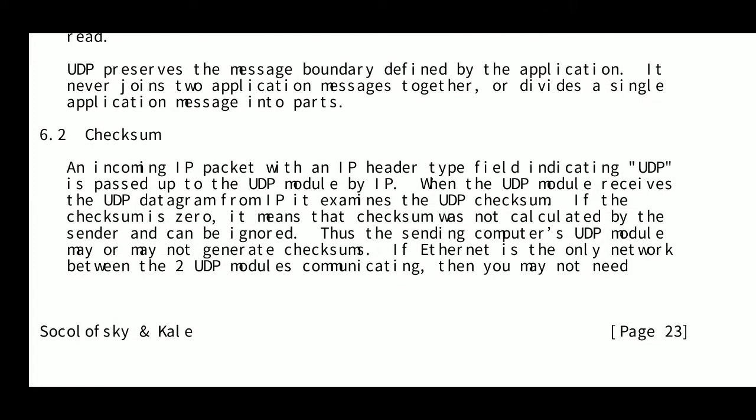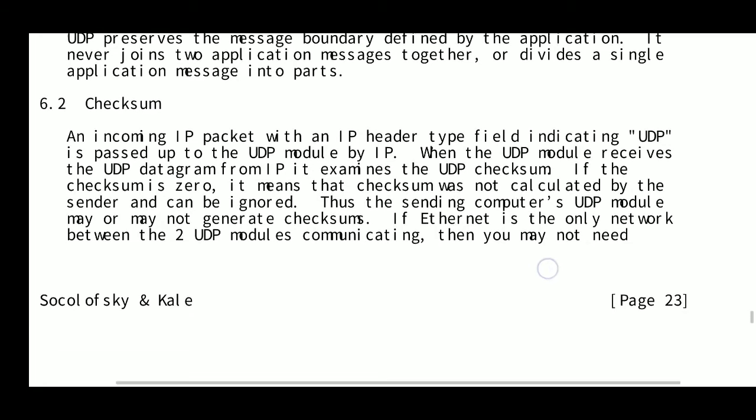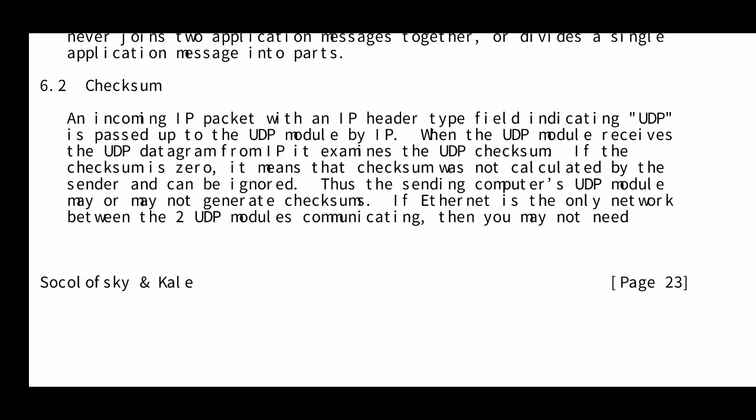Whenever you want to send unbreakable messages with boundaries, you use UDP. The second important feature of UDP is the checksum. An incoming IP packet with an IP header type field indicating UDP is passed to the UDP module by IP. When the UDP module receives the UDP datagram, it examines the checksum. If the checksum is zero, it means the checksum was not calculated by the sender and can be ignored.